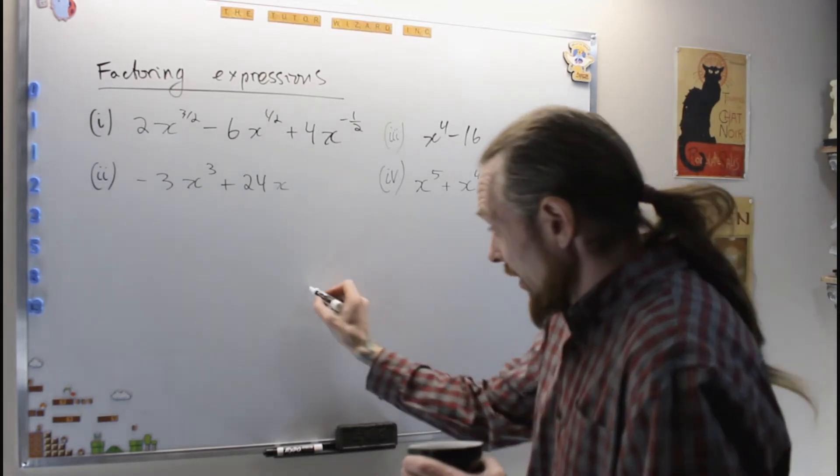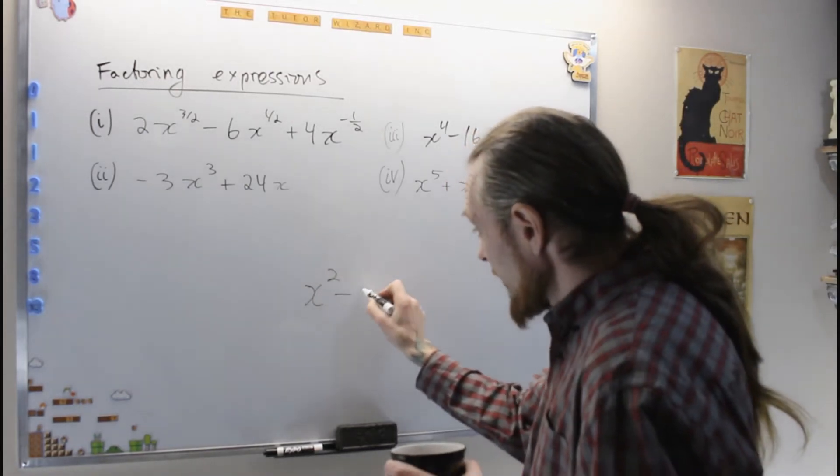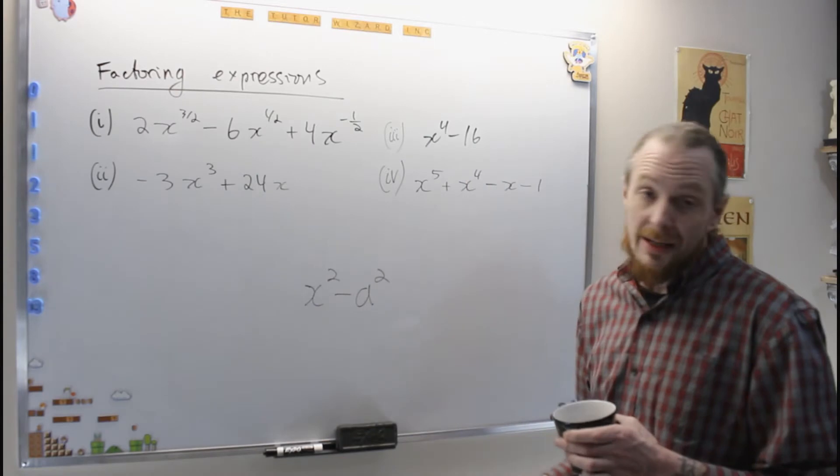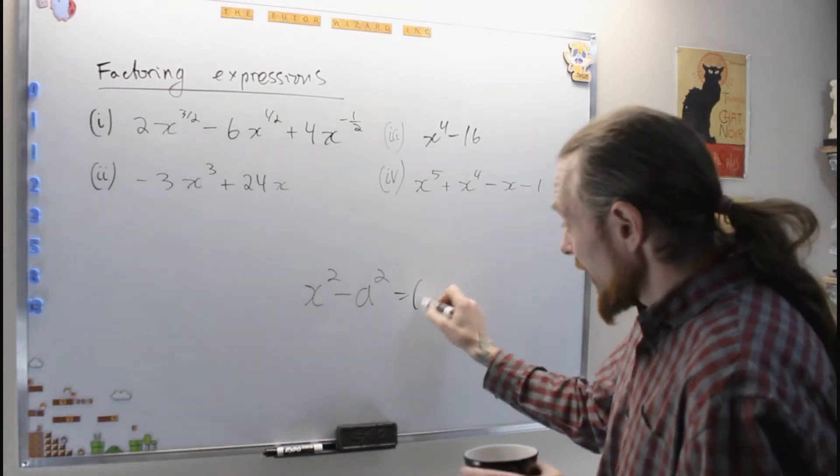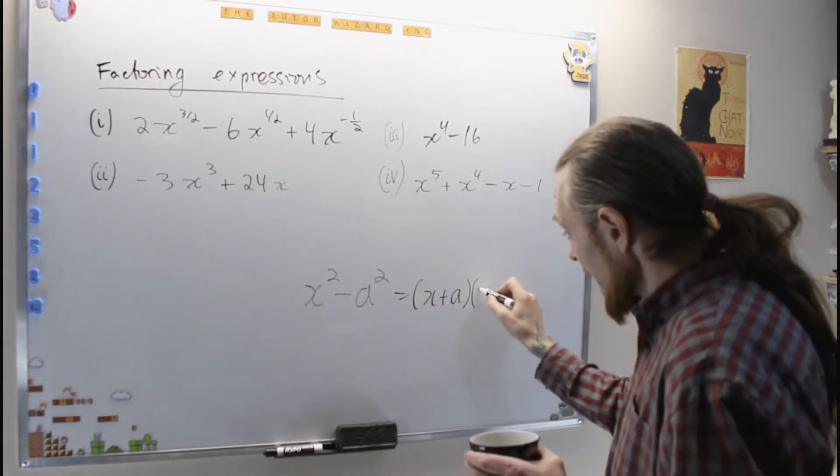But the clever trick is we want to use a few of the rules. One of the first really good rules is the difference of squares. As soon as you see you have x squared minus a squared, we know that is x plus a, x minus a.